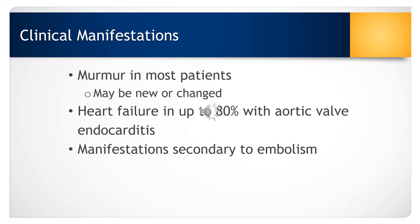A patient with infective endocarditis will typically present with a murmur — it may be a new murmur or an existing murmur that has gotten worse. Heart failure will be seen in 80% of patients who have aortic valve endocarditis. Other manifestations may be secondary to embolism: a splenic embolism causes sharp left upper quadrant pain; renal emboli cause flank pain, hematuria, and azotemia; emboli to the arms or legs produce signs and symptoms of deep vein thrombosis.